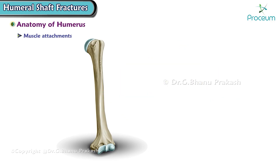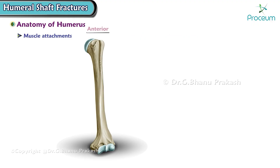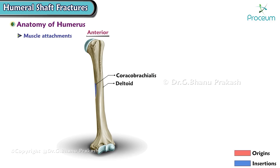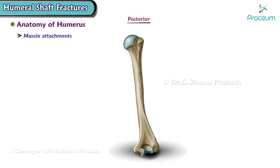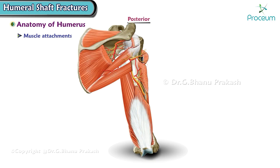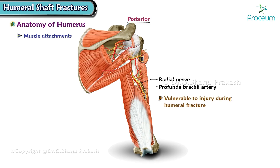The humeral shaft serves as the attachment site for numerous muscles. Anteriorly, the coracobrachialis, deltoid, brachialis, and brachioradialis muscles attach to the shaft. Posteriorly, the deltoid tuberosity of the lateral aspect is where the deltoid muscle attaches, and the medial and lateral heads of the triceps muscle attach. The radial or spiral groove of the humerus lies over the posterior aspect of the humeral shaft and houses the radial nerve and profunda brachii artery, making them vulnerable to injury during a humeral fracture.